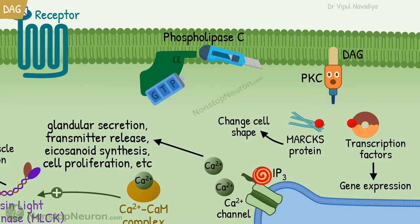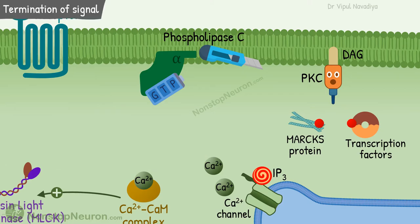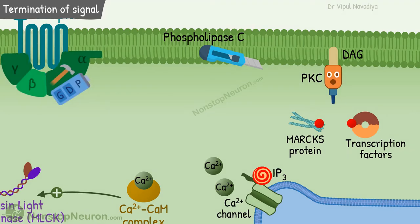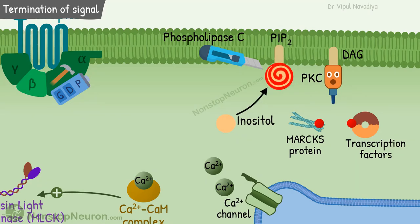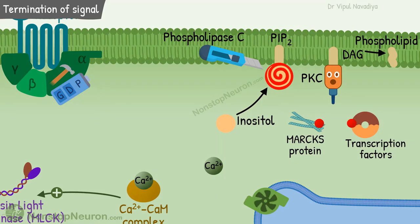These are the effects produced by the Phospholipase C pathway. For signal termination: first, the alpha subunit has GTPase activity, so it hydrolyzes GTP into GDP and inorganic phosphate. The GDP-bound alpha subunit then reassociates with the beta-gamma complex. Other second messengers are also degraded — inositol trisphosphate is dephosphorylated to inositol, which is reutilized in the synthesis of PIP2. DAG is converted to phospholipids. Finally, calcium is pumped back into the endoplasmic reticulum or out of the cell.